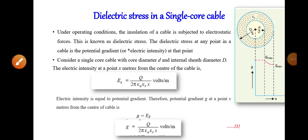Hello students. The next topic is dielectric stress in a single core cable. Under operating conditions, the insulation of this cable is subjected to electrostatic stresses, and this is known as dielectric stress. The dielectric stress at any point in a cable is the potential gradient at that point, since potential gradient is defined as the rate of increase of potential at that particular point — which is the same as the dielectric stress at that point.